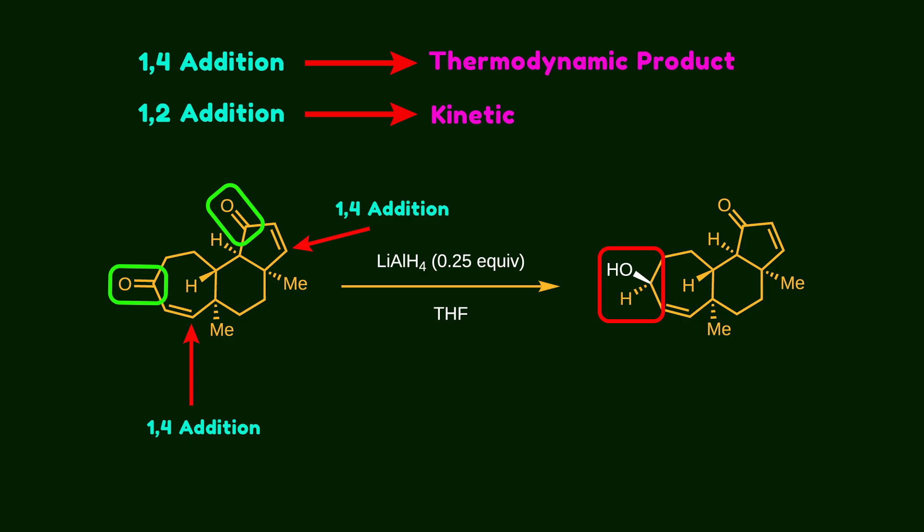In this reaction, only 0.25 equivalents of lithium aluminum hydride are used, which is a low amount. So the reaction follows the faster path. That's why 1,2-addition is the major product.